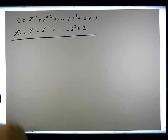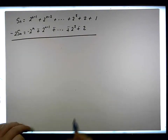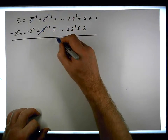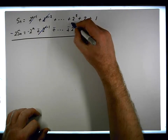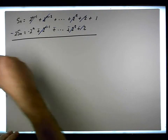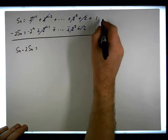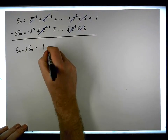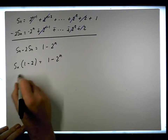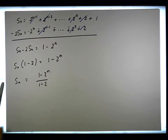If we subtract S(n) from 2·S(n), each term cancels with the one prior to it. What we're left with is S(n) minus 2·S(n) equals 1 minus 2^n, so S(n)·(1 minus 2) equals 1 minus 2^n, and therefore S(n) = (1 minus 2^n) / (1 minus 2).